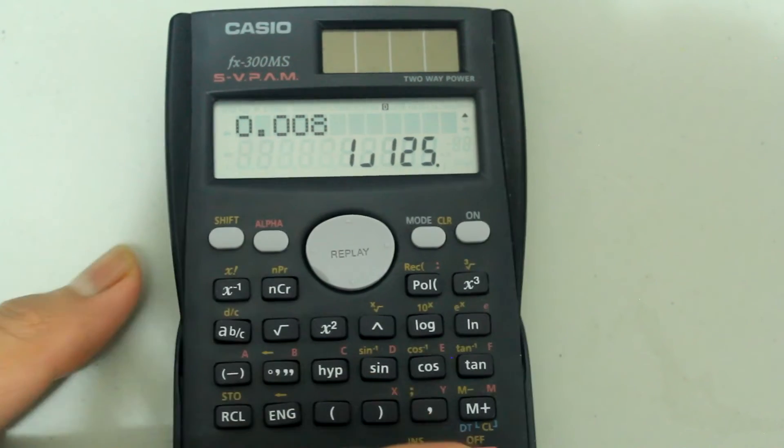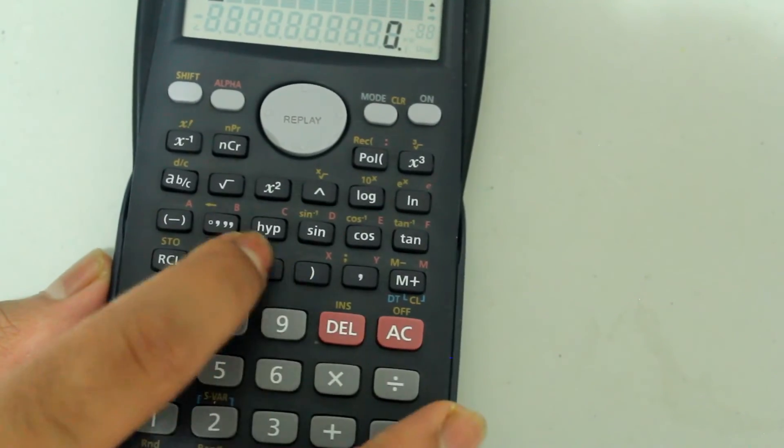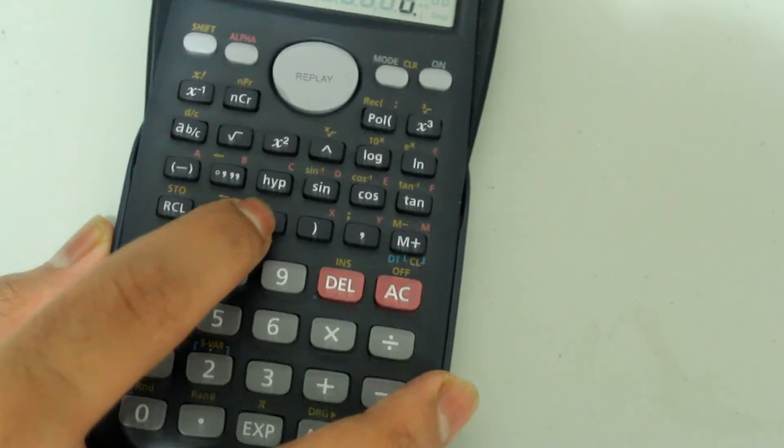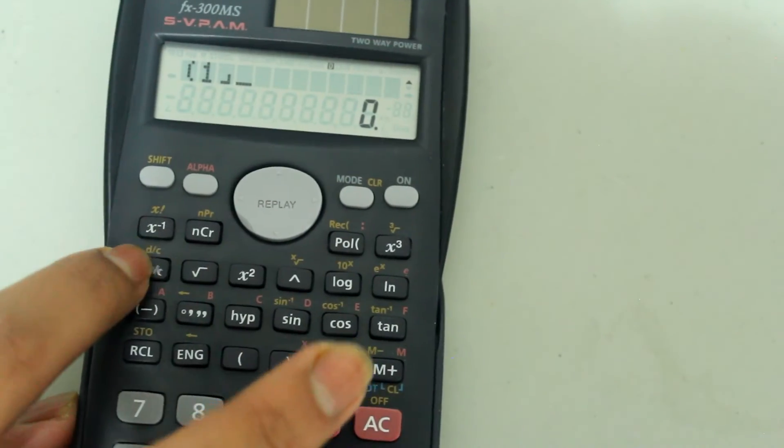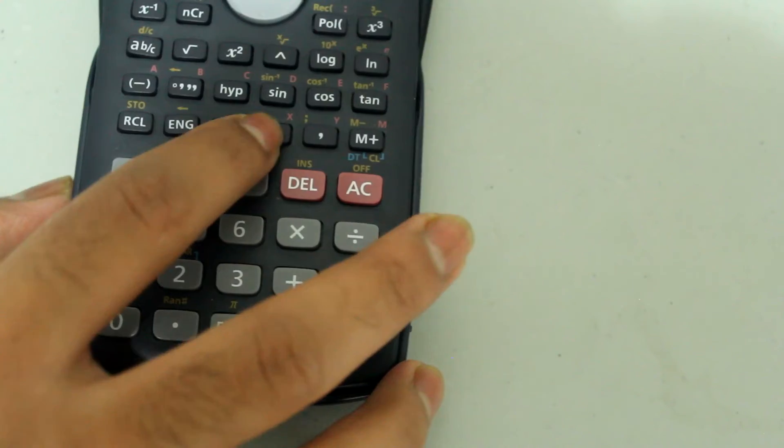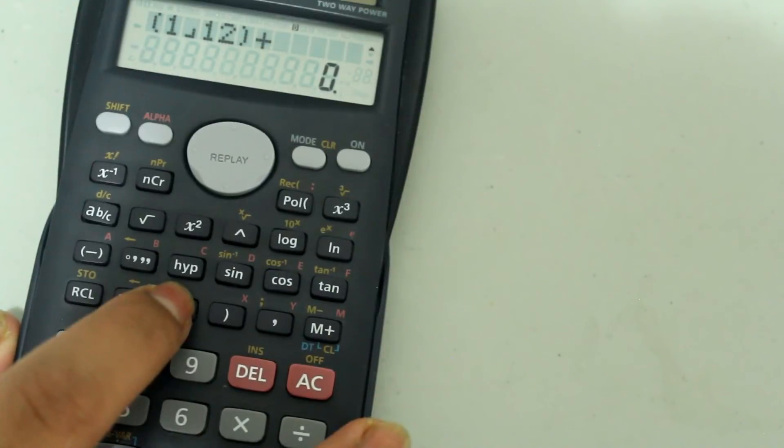So let's add 1/12 plus 2 over 24. Open parenthesis, 1, fraction bar, 12, close the parenthesis, and then add, open parenthesis,